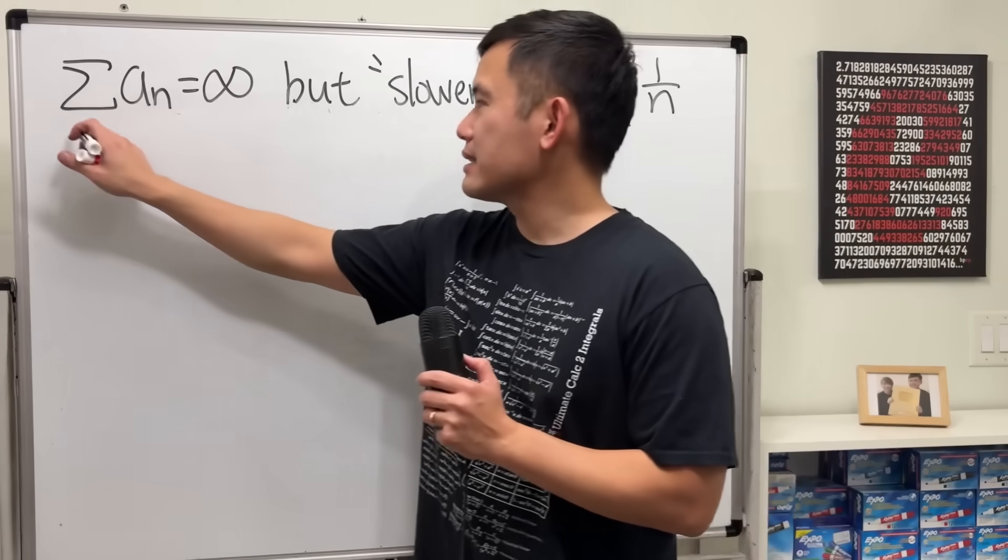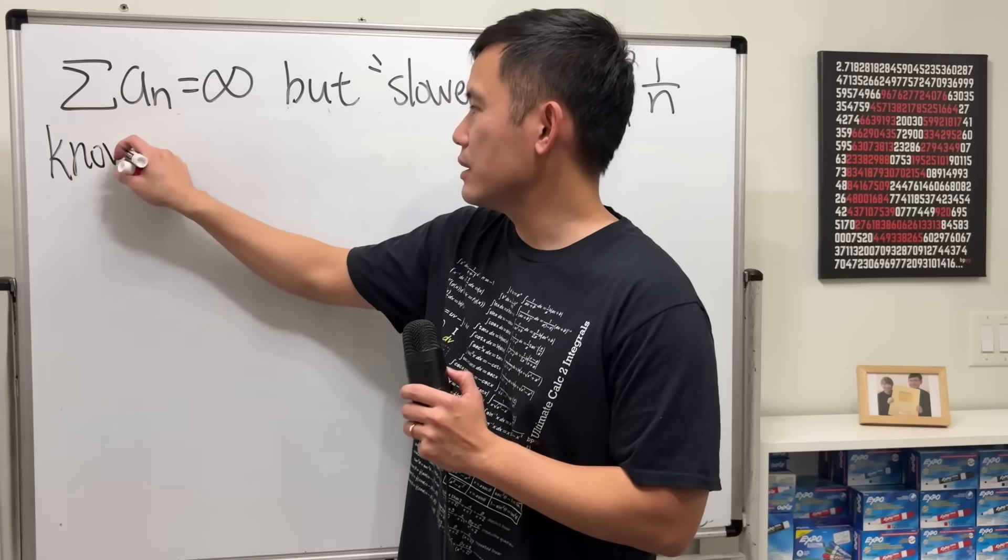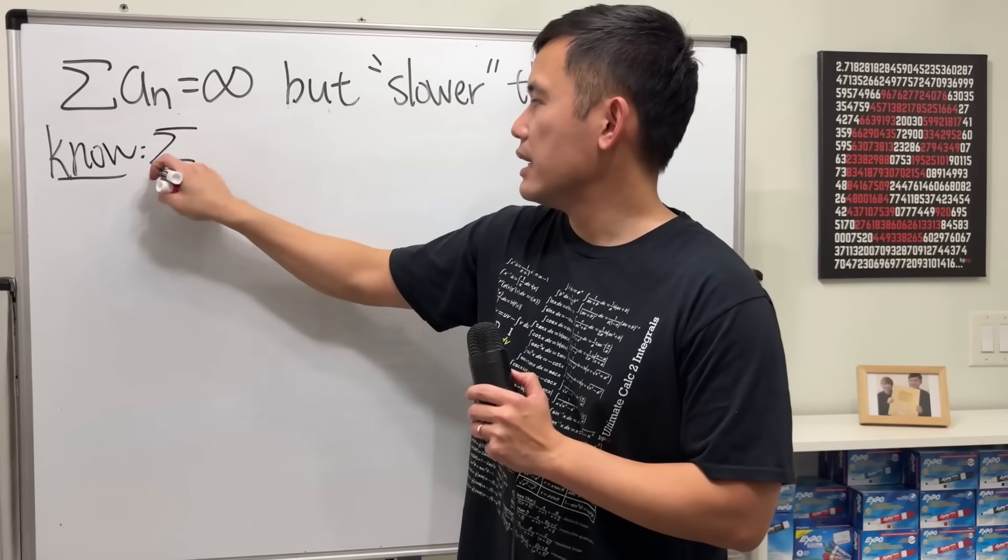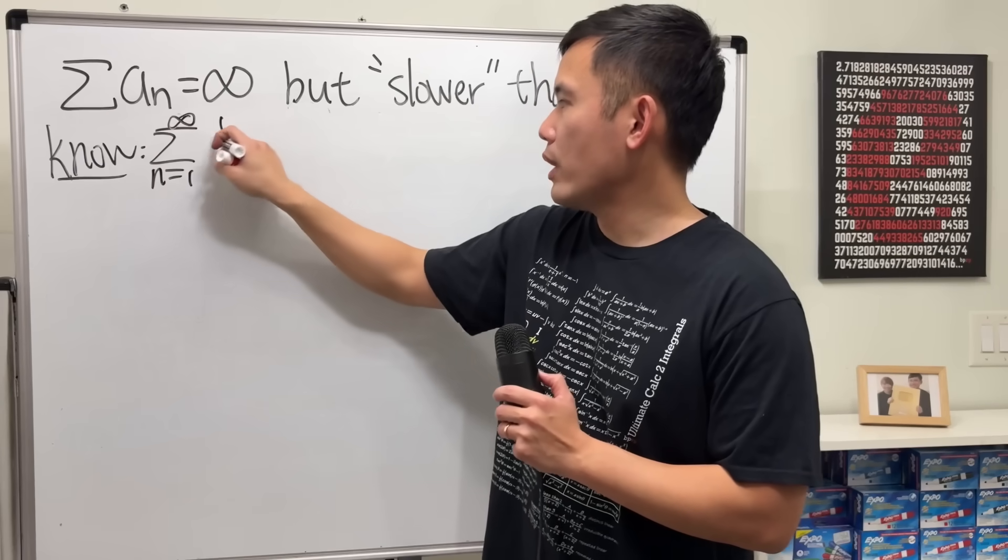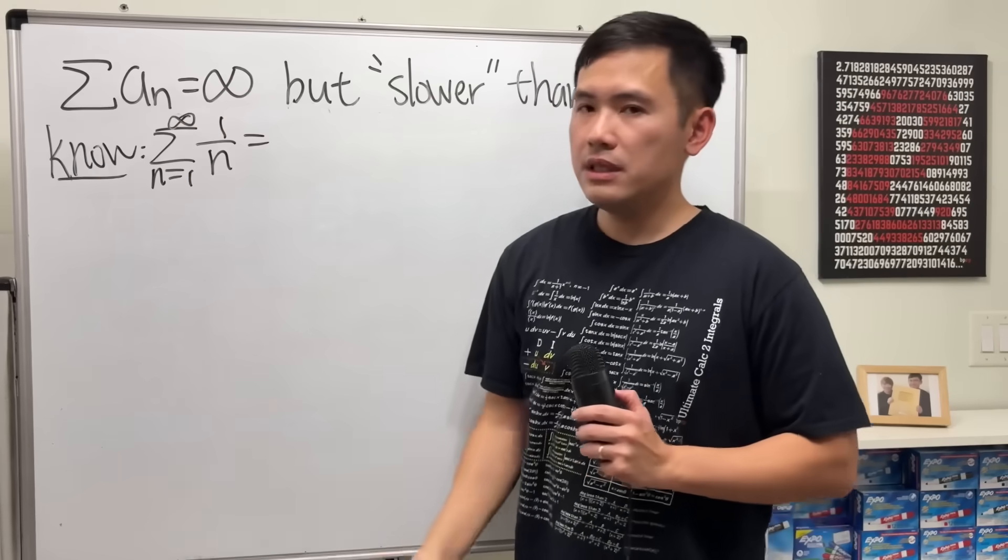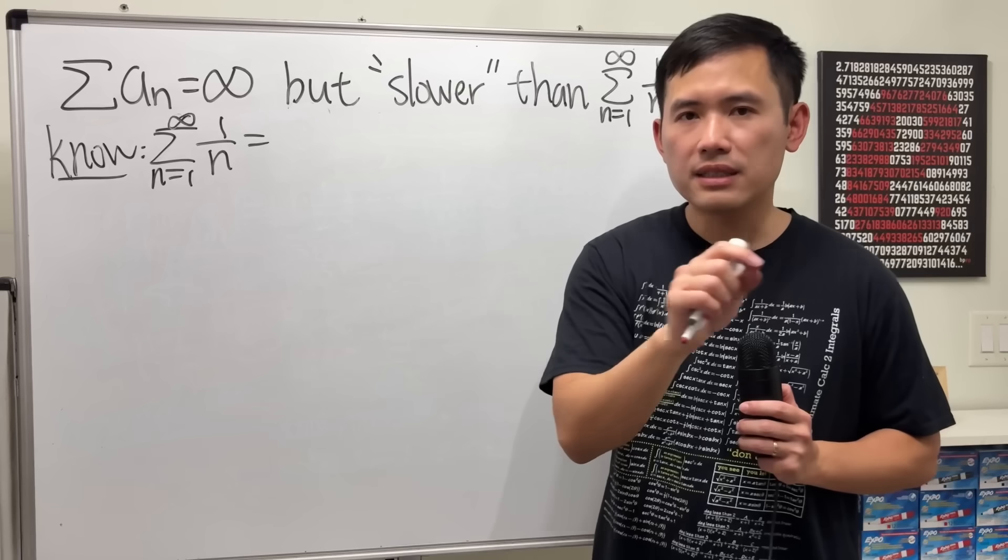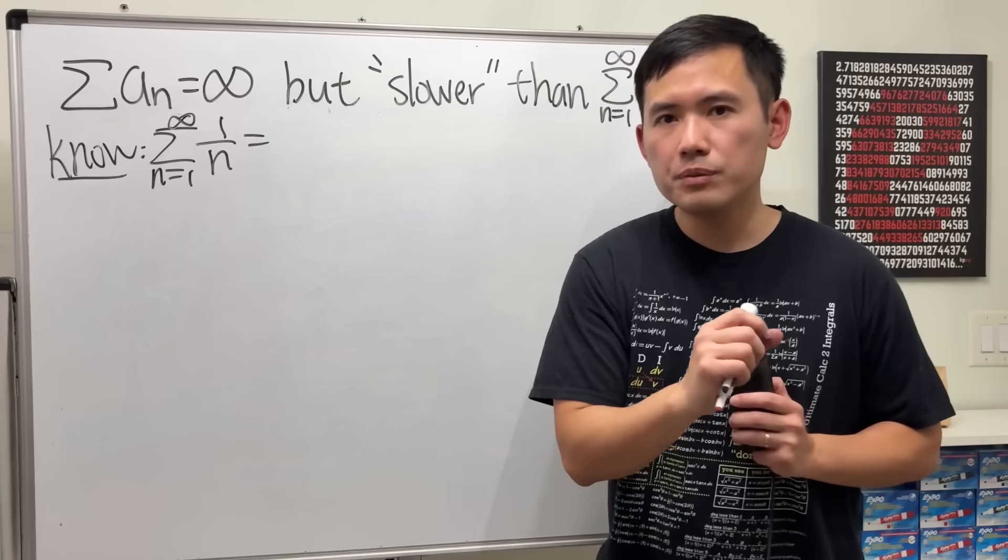Last time, we did a series as n goes from 1 to infinity of 1 over n. This means we do 1 plus 1/2 plus 1/3 plus dot dot dot, infinitely many terms.